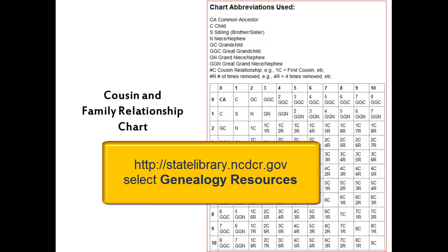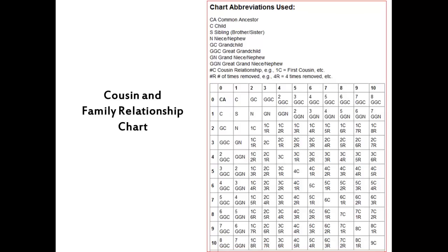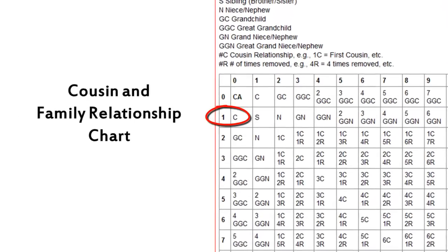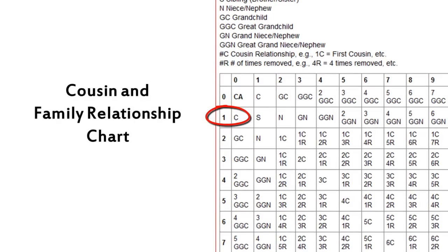All you need to know is the generation from the common ancestor for two people. For example, if one person is one generation from, or the child of, the common ancestor, look at line one. If the second person is the third generation in descent, or the great-grandchild, look at column three. Go across line one.